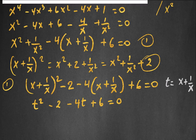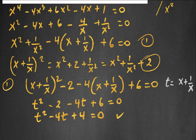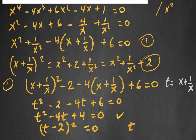And I get t squared minus 4t plus 4 is equal to 0. We know that t minus 2, squared, equals t squared minus 4t plus 4. So t minus 2, squared, is equal to 0, which has a solution of t is equal to 2.